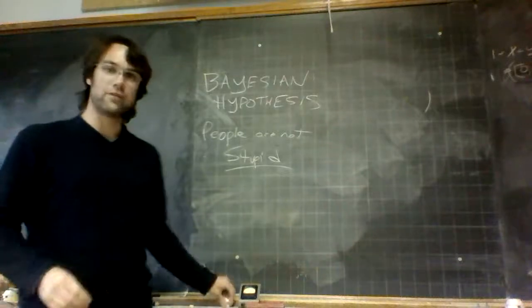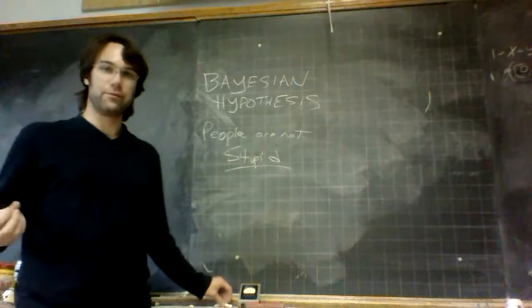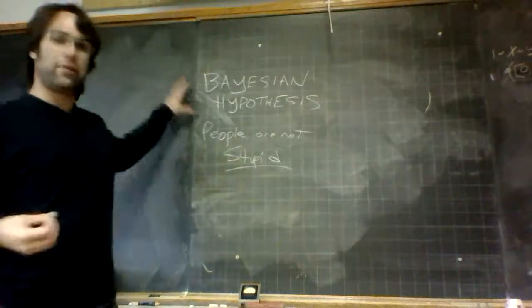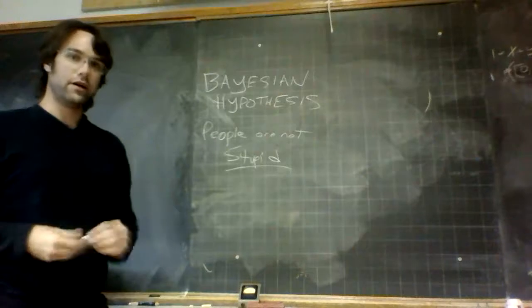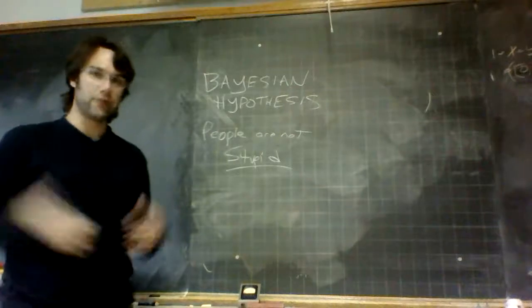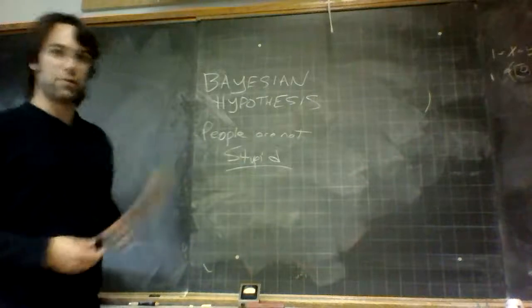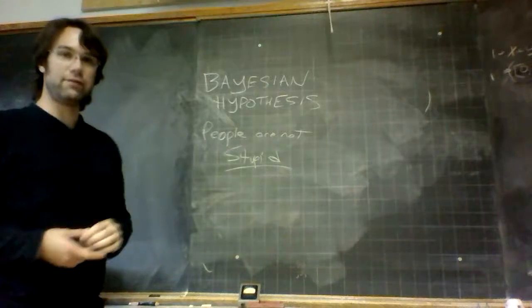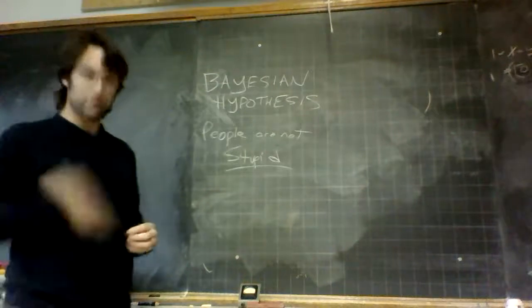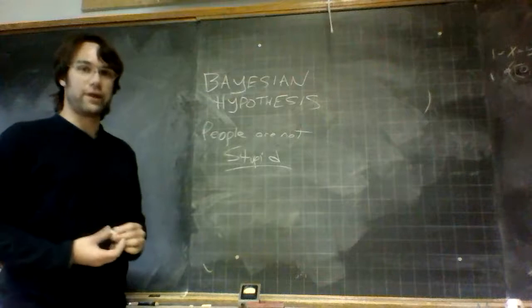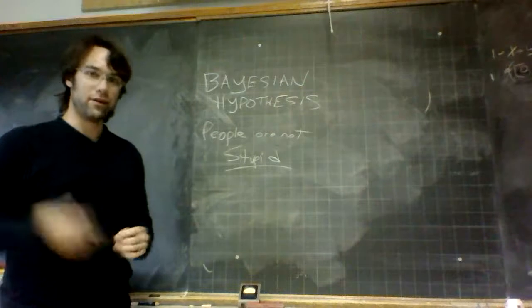There's an assumption that Harsanyi is going to make that is crucial for the arguments that follow, called the Bayesian Hypothesis. The Bayesian Hypothesis is the hypothesis that, in the context of a game — not even necessarily a competitive game — your opponents or the people you're playing with are not stupid. In fact, they are optimally intelligent, and they are using Bayesian probability to govern their actions. This acts as a constraining idea on their strategies.